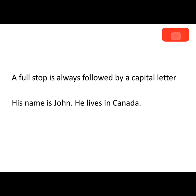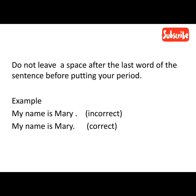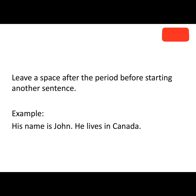Example: 'His name is John.' The next word will be in a capital letter: 'He lives in Canada.' When you are using a full stop, do not leave a space after the last word of the sentence before putting your period. For instance, 'My name is Mary.' — leaving a space before the dot would be incorrect. After the period, leave a space before starting another sentence. Example: 'His name is John. He lives in Canada.' Give a space before you start the next sentence.